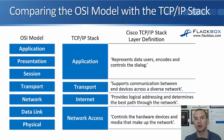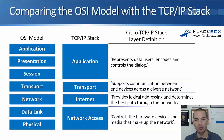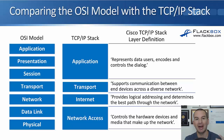Over on the right, we've got the TCP/IP stack with only four layers. Up at the top, we've got the Application layer, which maps to all three of the Application, Presentation, and Session layers in the OSI model. Below that, we've got the Transport layer, which is a one-to-one mapping with the Transport layer in the OSI model. Underneath that, we've got the Internet layer, equivalent to the Network layer. And down at the bottom, we've got the Network Access layer, which maps to the Data Link and Physical layers in the OSI model.